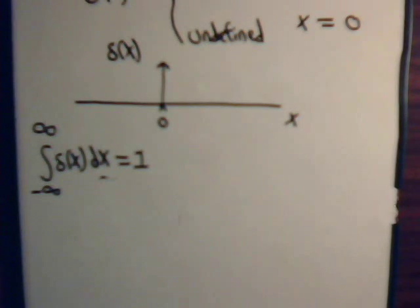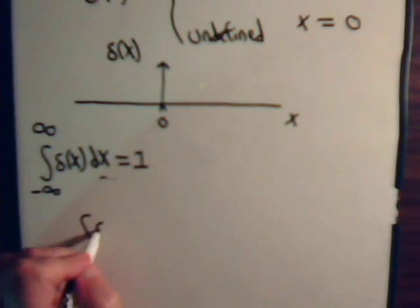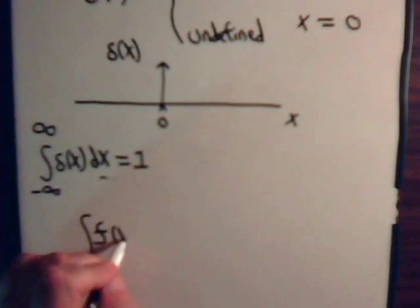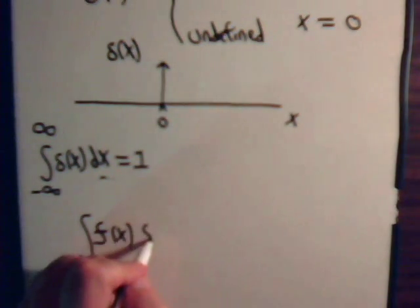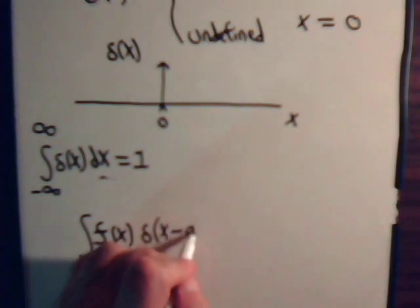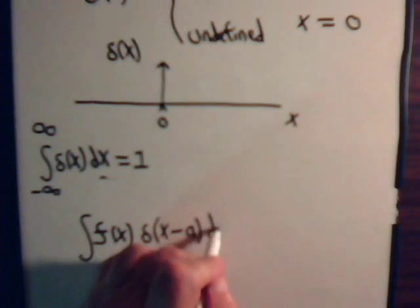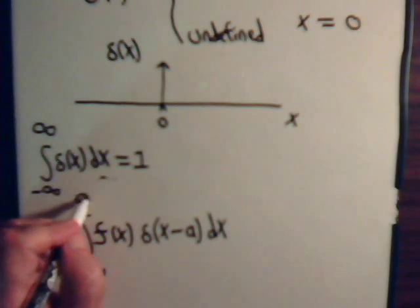Suppose we have this integral. So, f of x times the Dirac delta function of x minus a dx. And we're going from minus infinity to plus infinity.